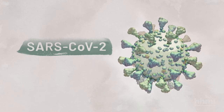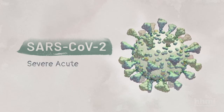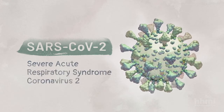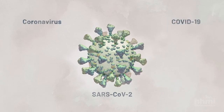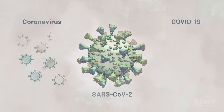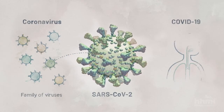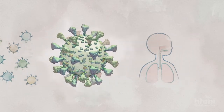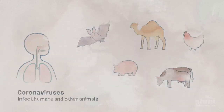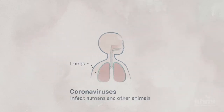This is the virus SARS-CoV-2. Its name stands for Severe Acute Respiratory Syndrome Coronavirus 2. You may have heard it called just the coronavirus or COVID-19. Coronaviruses are actually a family of viruses that include SARS-CoV-2, and COVID-19 is the name of the disease caused by it. Coronaviruses infect humans and other animals. In humans, they cause the common cold and in some cases more serious respiratory diseases.